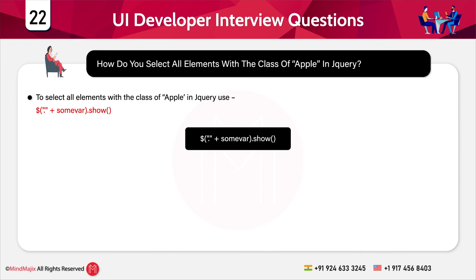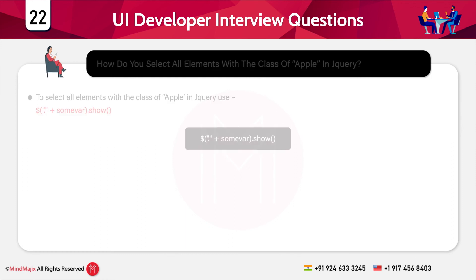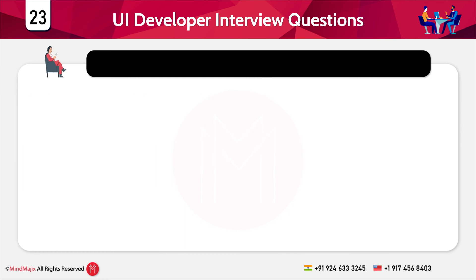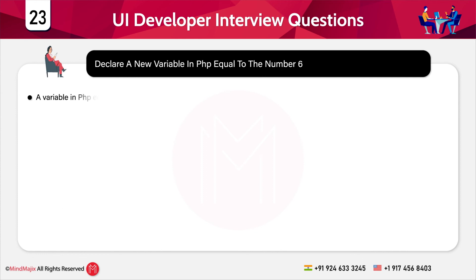The next question is: declare a new variable in PHP equal to the number six. This is a very simple question — you define a variable in PHP and assign a value of six to it: $number = 6.